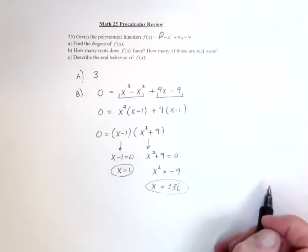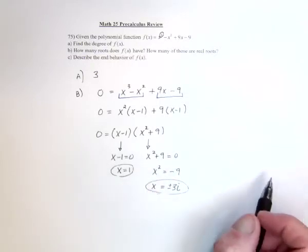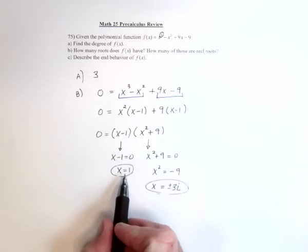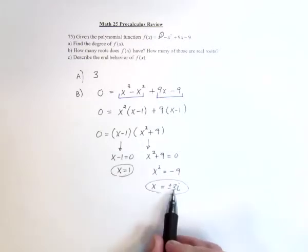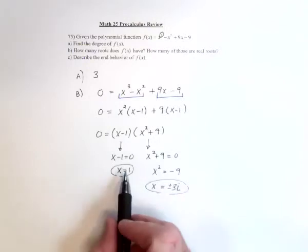Because it's the square root of 9, we'd have plus or minus 3i. And that pretty much answers how many roots does it have. So, there's three roots. One real and two imaginary. How many are real? Just one.